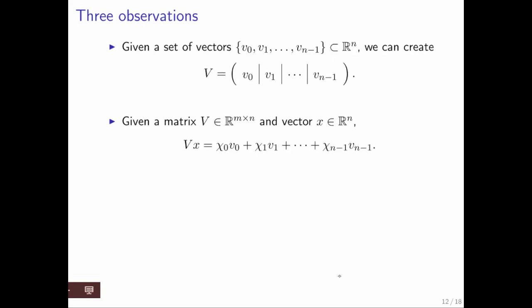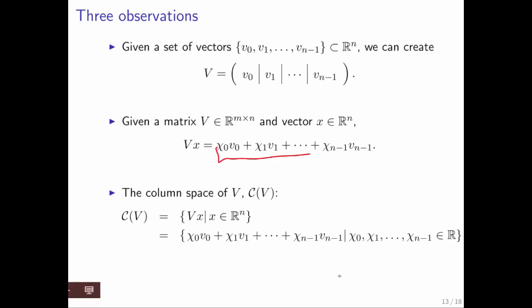Now, if you look at V times x for an arbitrary x, that takes a linear combination of these vectors. Now, notice that the set of all linear combinations of these vectors, or the set of all vectors that result from doing V times x, is known as the column space, C of V.